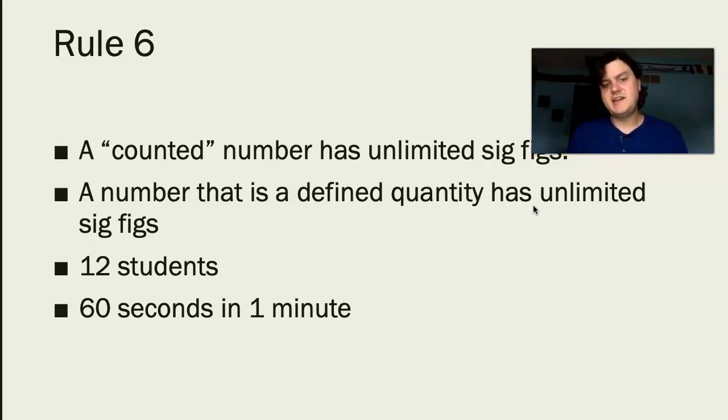The second case here is when we have a concept that is defined with a number. There are 60 seconds in one minute. A minute is defined as having exactly 60 seconds. In this case, the number 60 has unlimited significant figures. There are not 60.02 seconds in a minute or 59.5 seconds in a minute. Keep an eye out for this one. It actually comes up quite a lot in chemistry for us.